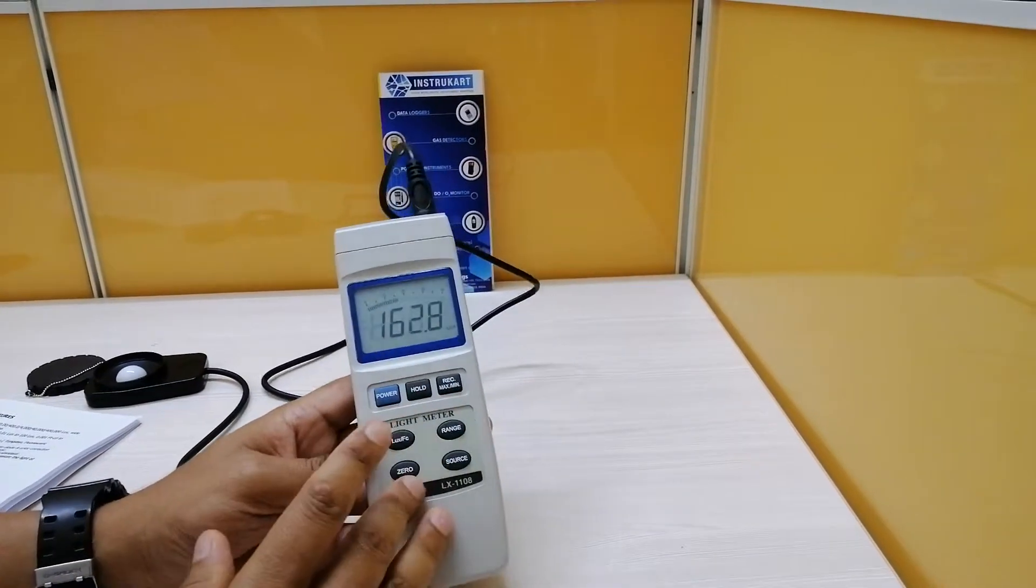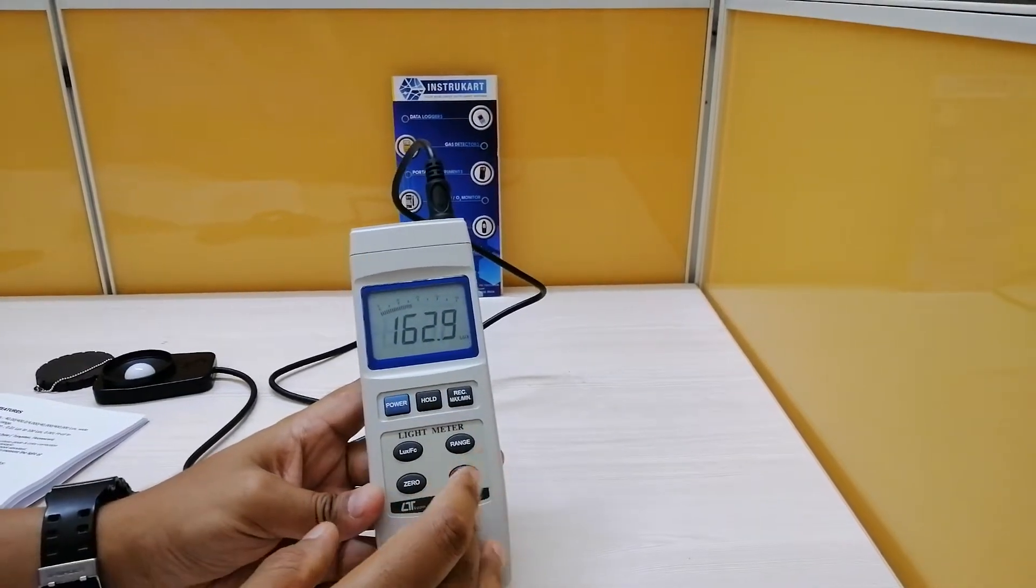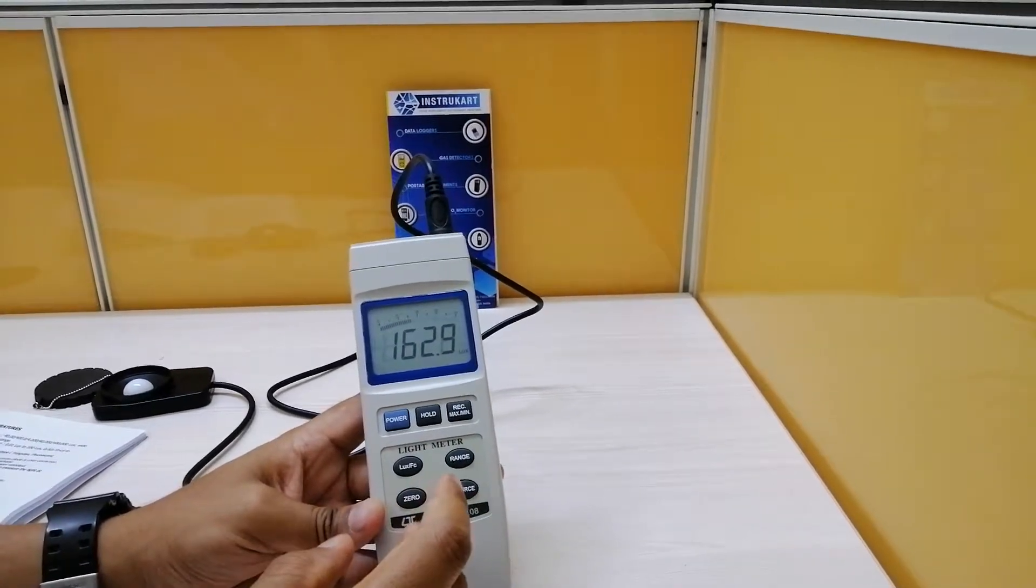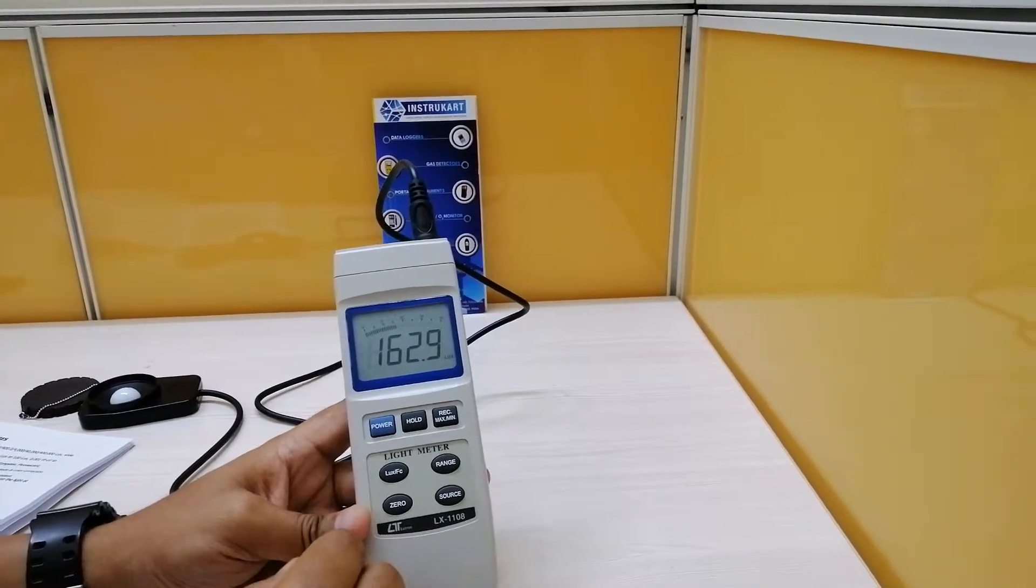There are certain keys which you can use to hold or record the lux, or toggle between lux and foot candle. You can also set it to zero or use the range or source button.